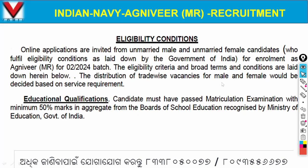Let's look at eligibility conditions. Online applications are invited from unmarried male and unmarried female candidates for enrollment as Agnivir metric recruitment for 2024 batch. The eligibility criteria and broad terms and conditions are laid down herein below. Educational qualification: candidates must have passed matriculation examination with minimum 50% marks in aggregate from the boards of school education recognized by the Minister of Education.